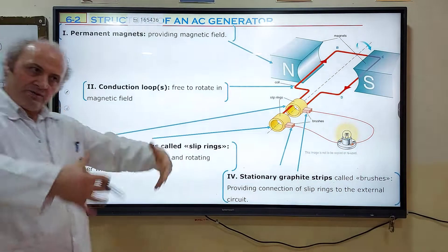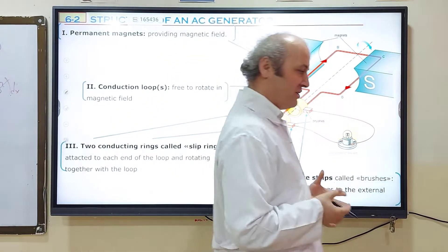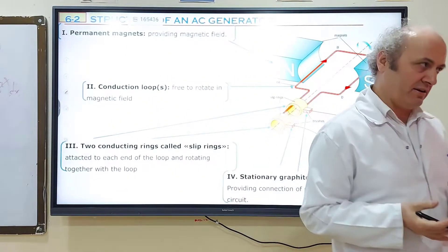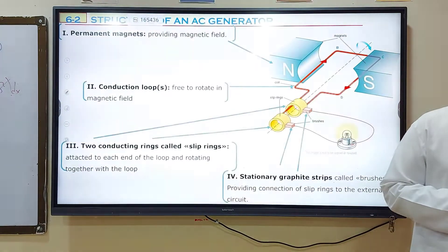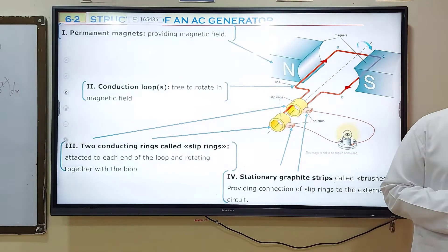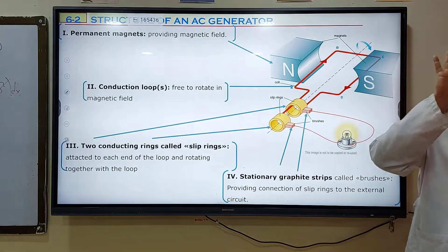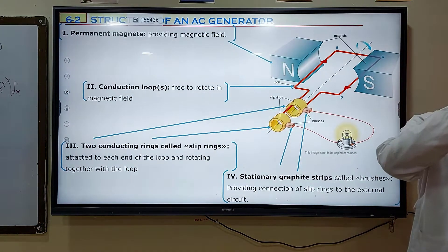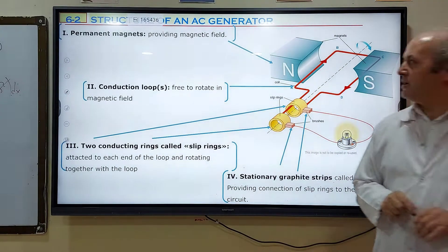We will now try to investigate generators in detail. An AC generator has four basic components.